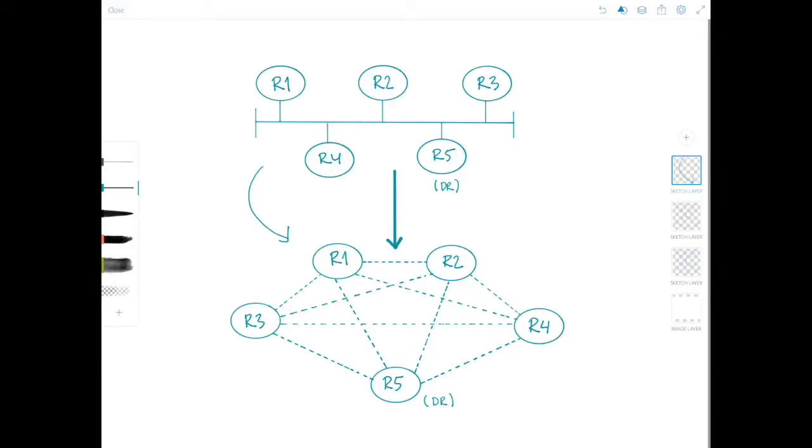So there's actually a formula to calculate this. For n number of routers, the number of adjacencies is n times n-1 divided by 2. Let me write that down here. So n times n-1 divided by 2. So in our case, it's 5 times 5-1 divided by 2, which is 10.